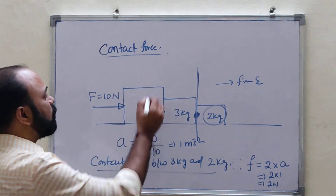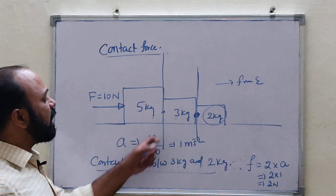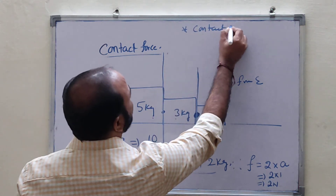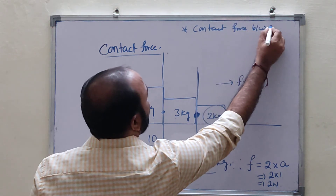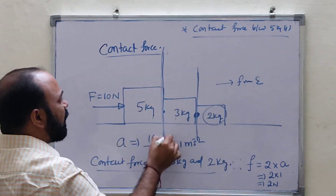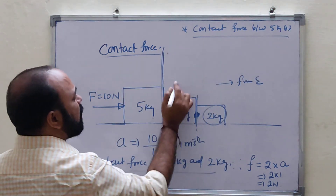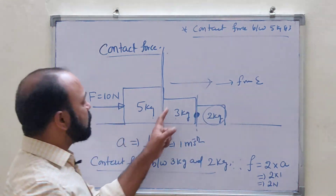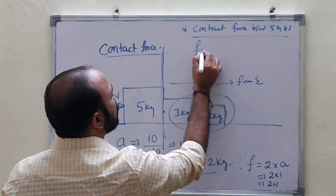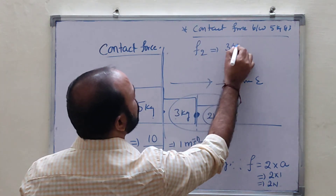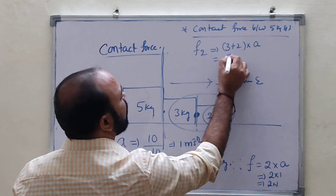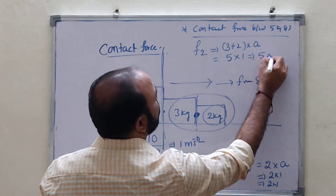Similarly, if they ask contact force between 5 kg and 3 kg: draw one line there. The applied force is on the 5 kg side, so the free end is on the other side. On the free-end side, we have 2 masses: 3 kg and 2 kg. So contact force F2 equals 3 plus 2 into acceleration of the system, which is 5 into 1, equals 5 Newtons.